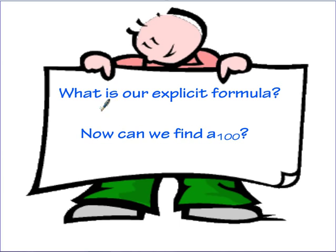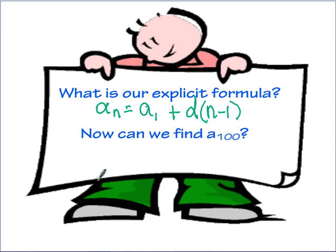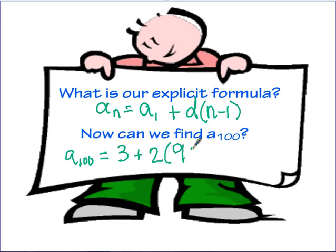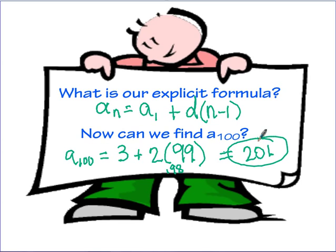The explicit formula to find any term in our sequence is: initial term plus the common difference multiplied by one less than the term number (n minus 1). This is the general explicit formula for all arithmetic sequences. To find the 100th term, we put in 3 plus 2 times 99, which gives us 198. Adding that to 3, the 100th term is 201. This way we don't have to write out all 100 numbers.